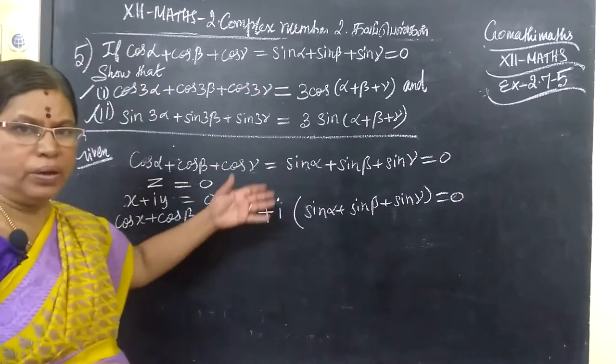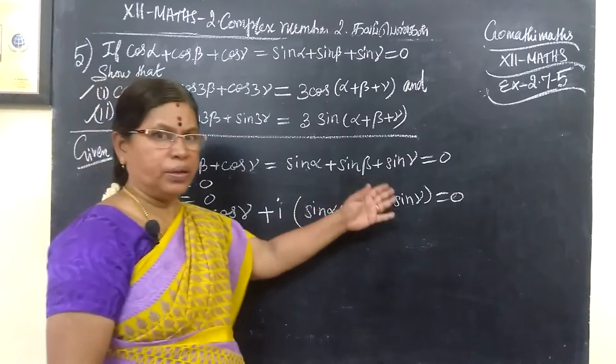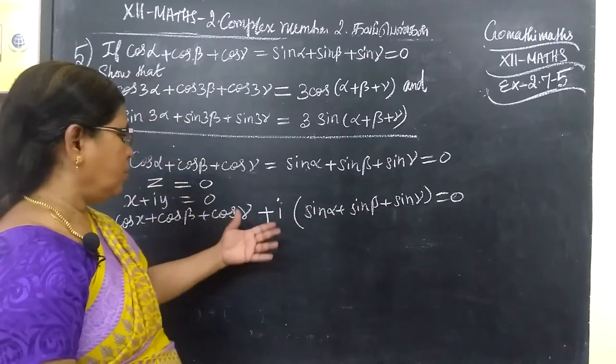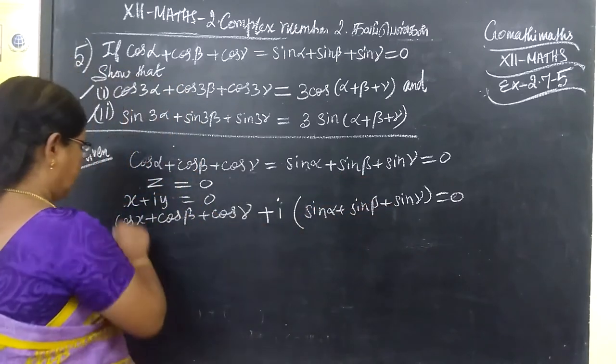Now, real part is 0, imaginary part is 0. So the total complex number is equal to 0.